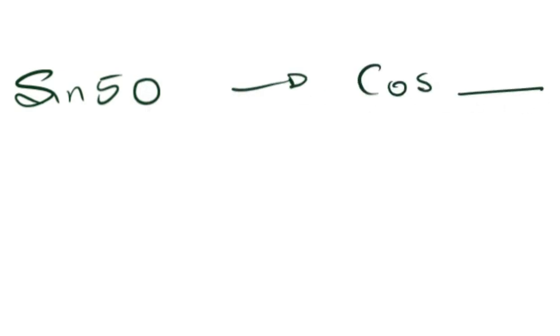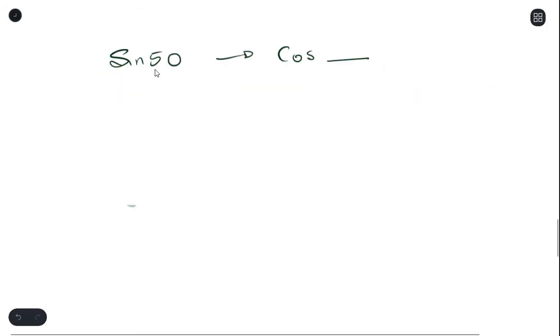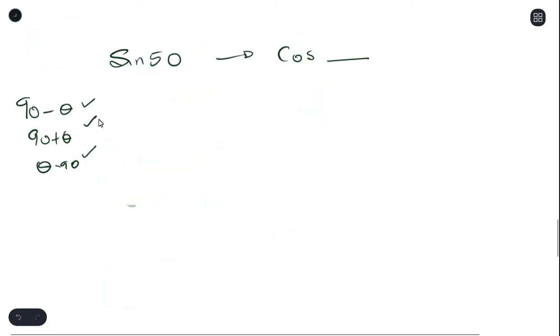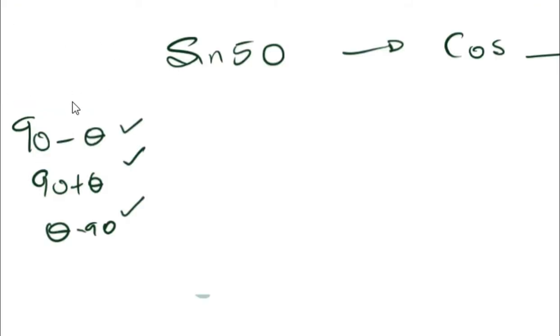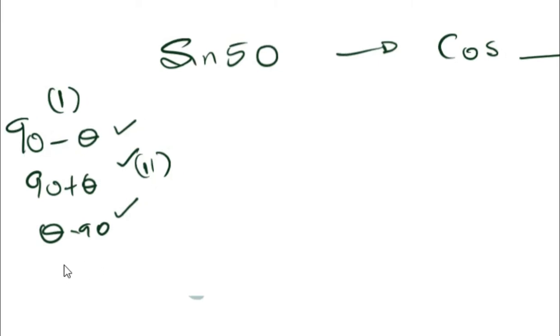We've discussed how to change from sine to cosine whenever you see 90. But what happens when you have actual values? If you want to change something like sine 50 into cosine of something, you need to rewrite 50 in terms of one of three forms: 90 minus theta, 90 plus theta, or theta minus 90. If you can write the angle in any of these forms, you can automatically change it to cosine. Use 90 minus theta for first-quadrant values, 90 plus theta for second-quadrant values, and theta minus 90 for negative fourth-quadrant values.